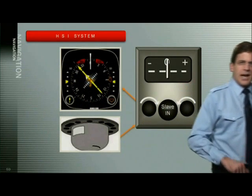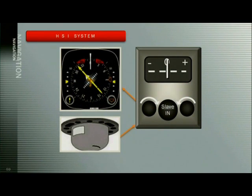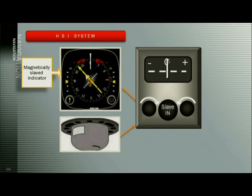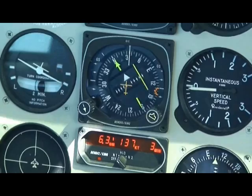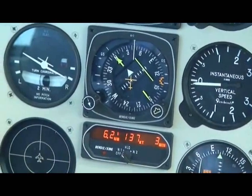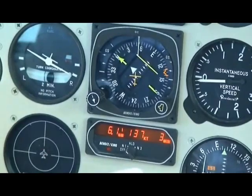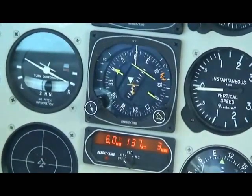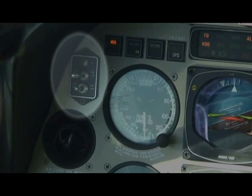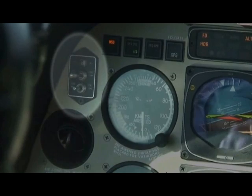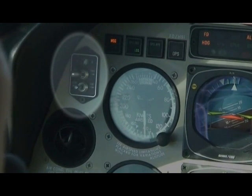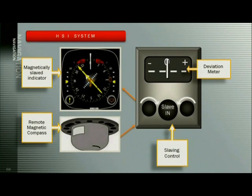Another advantage of an HSI over a conventional heading indicator and VOR is that most are magnetically slaved. This means the HSI automatically seeks and holds magnetic north and does not need continual precession checks from the pilot. This slaving is accomplished through a remote magnetic sensor called a flux detector, typically located out on a wing, which senses the Earth's magnetic field and automatically corrects the HSI. The HSI system also allows for a slaving control, which lets the pilot manually correct a large amount of deviation on the HSI display. The deviation meter on the slaving control indicates the amount of correction applied.